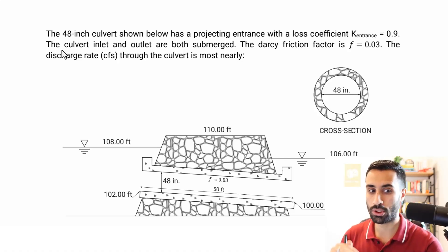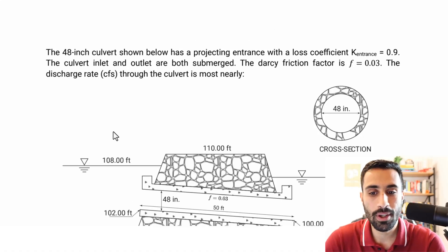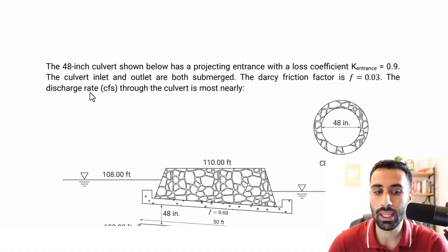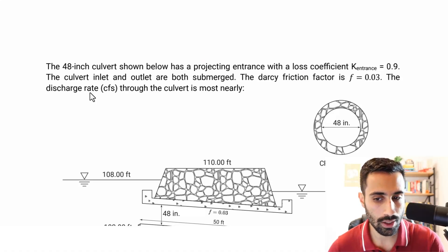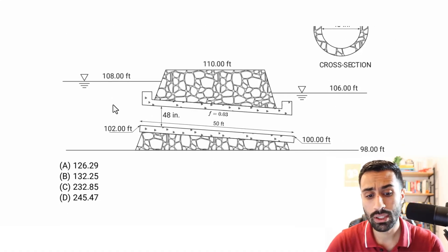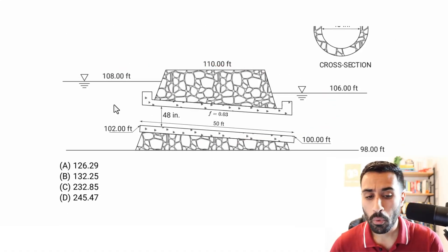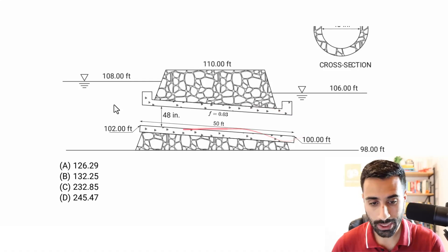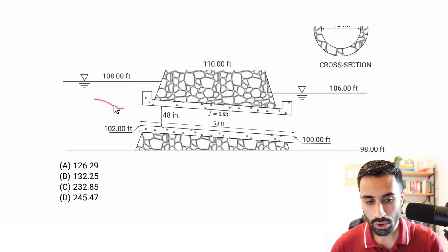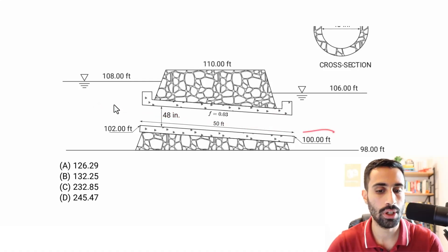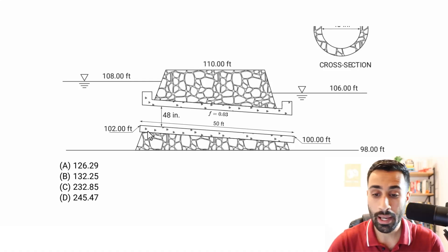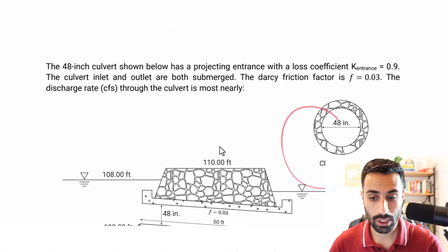So let's go through this, assuming you already attempted this. Let's see if you got it right. We have a 48-inch culvert shown below with a projecting entrance with a loss coefficient K entrance of 0.9. And that's what we have in the figure. As I'm reading this, I'm looking at the figure as well. We have a culvert — this is the main section we call the culvert. The water travels in this direction because it's sloped, so water has to travel down through that culvert. And the cross-section of the culvert is also given.